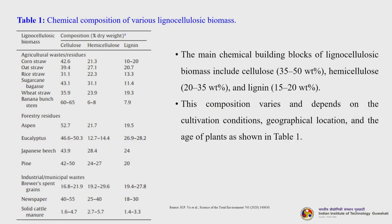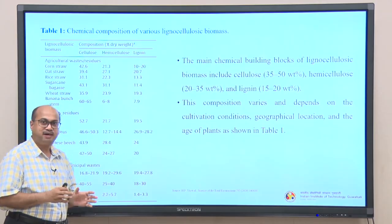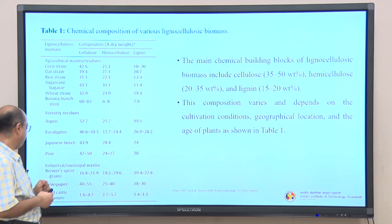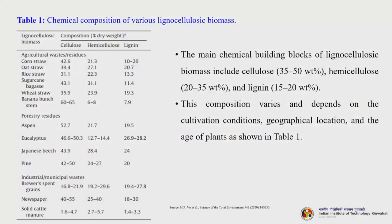For corn straw or oat straw, cellulose is in the range of 39 to 42 percent, hemicellulose from 21 to 27 percent, and lignin 10 to 20 percent. For bagasse, the cellulose is a little more. For aspen, a forestry species, the cellulose amount increases. For solid cattle manure, all three major components — cellulose, hemicellulose and lignin — are very low, with other components more predominant. The key understanding is that cellulose, hemicellulose and lignin vary, and pretreatment technologies should be developed to accommodate multiple feedstocks rather than a single or two feedstocks.